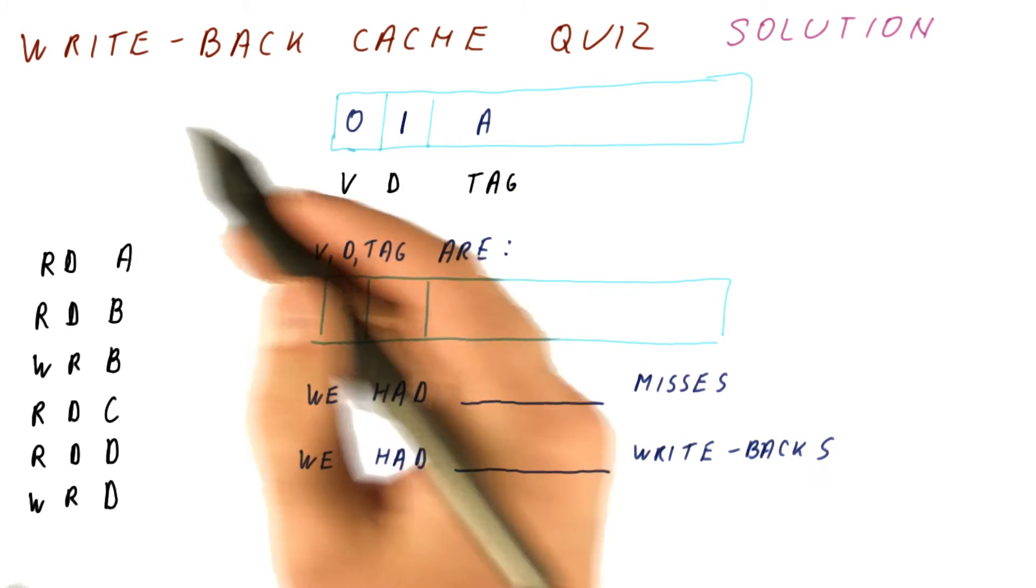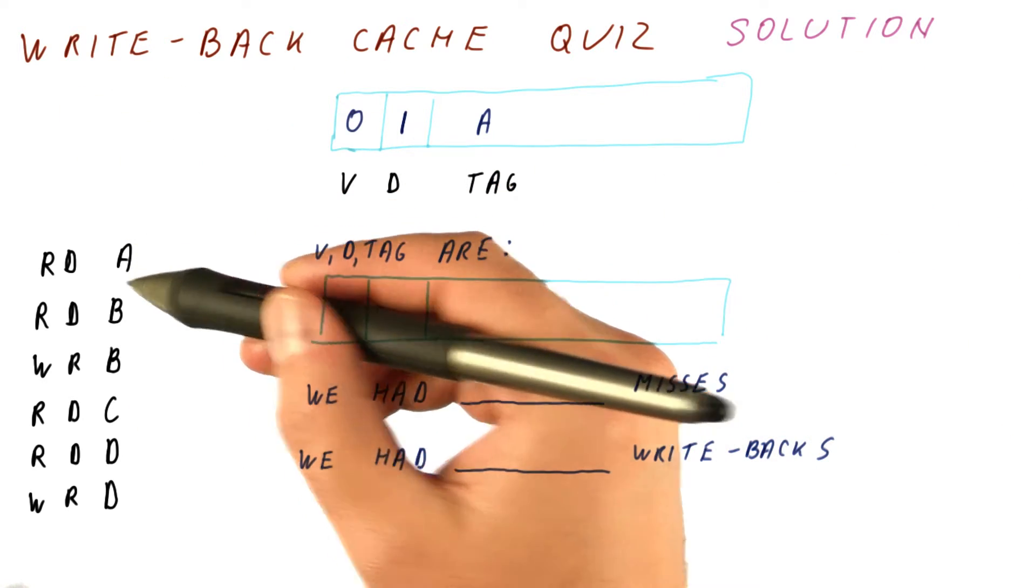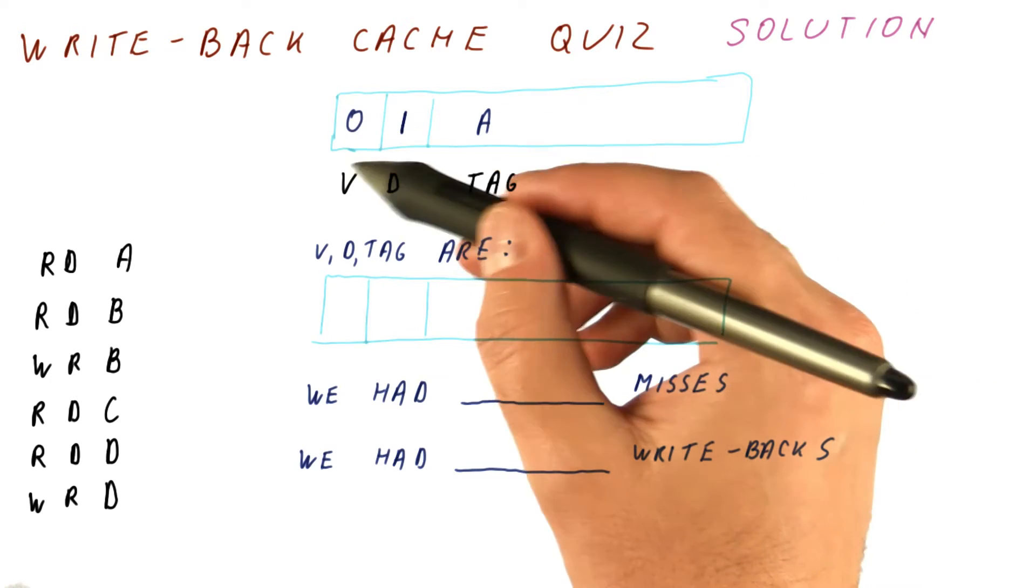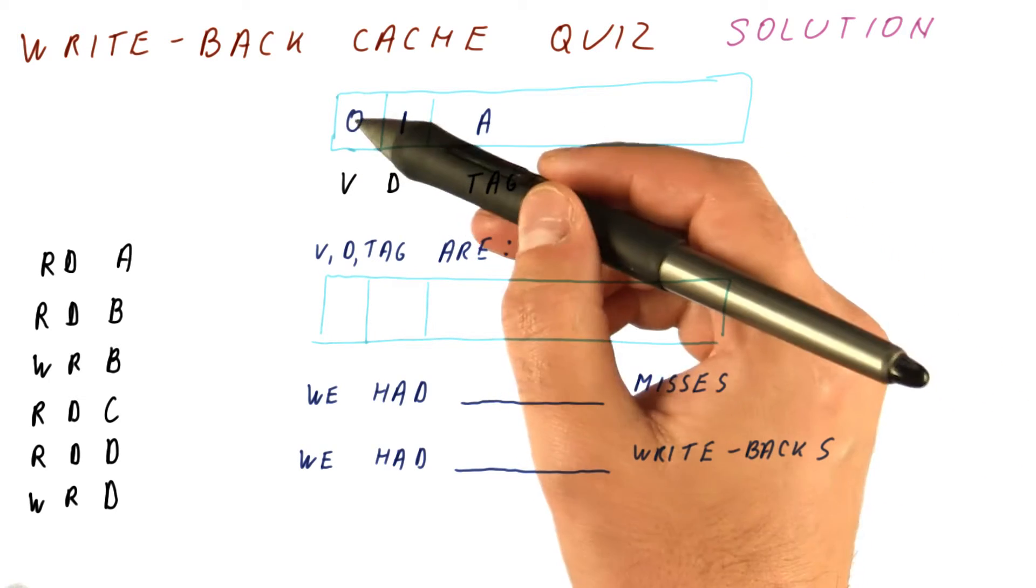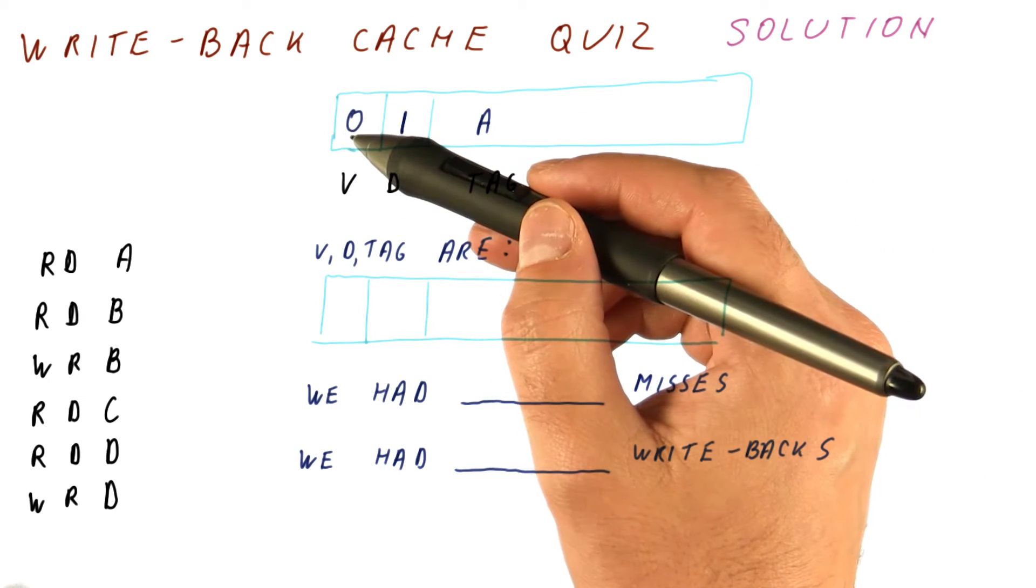Let's look at the solution to a write-back cache quiz. When we read A, we check the tag and the valid bit. The tag matches A, but the valid bit is zero, so this is a miss.